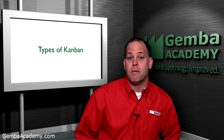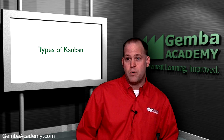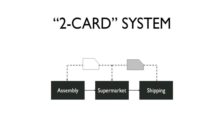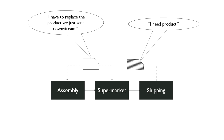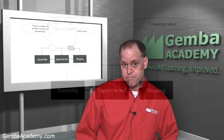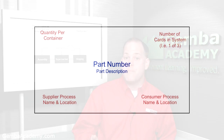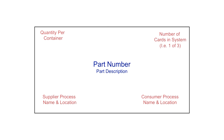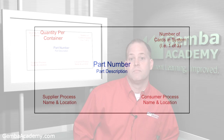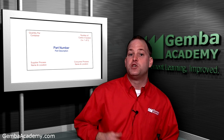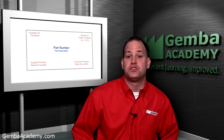To wrap up this first overview module, let's learn about some of the most common types of Kanban. The first type is the classic two-card system where production and withdrawal Kanban cards are used. A shaded withdrawal Kanban goes from shipping to the supermarket as a signal that product is needed to meet a customer request. Once a shipping clerk removes product from the supermarket, a production Kanban is sent to the assembly department signaling that an item needs to be replenished. A Kanban card normally contains information such as the part name and number, the supplier process name, the quantity per container, the delivery address, the storage address, and the number of cards in the system. In a card-based system, the card is pulled as soon as the first part is taken.